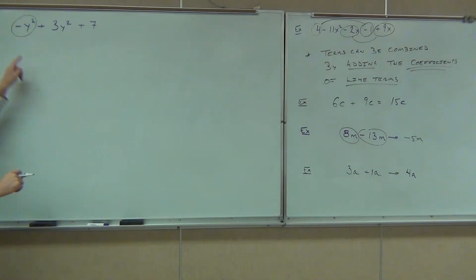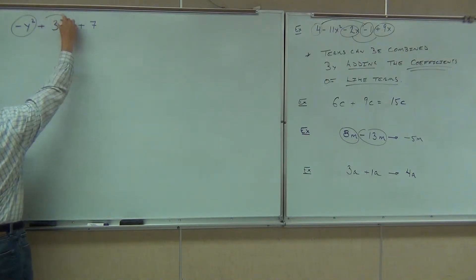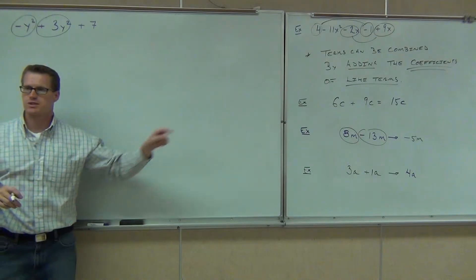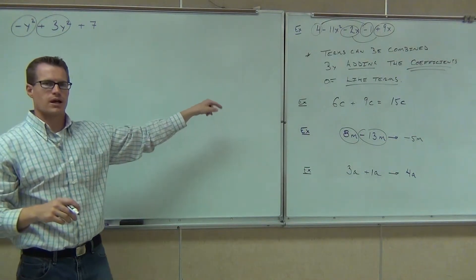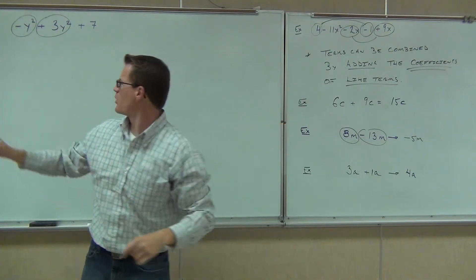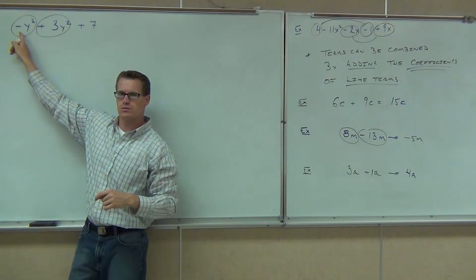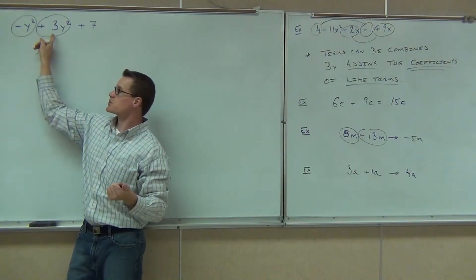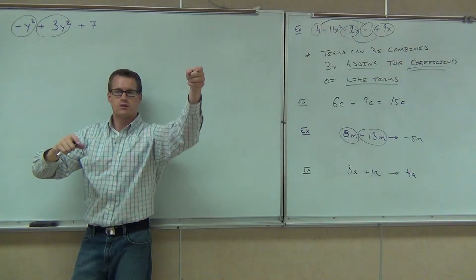So, what's the like term with negative y squared? Y. We're going to circle that term with the sign. Can you combine those like terms like we did over here? Negative y squared and 3y squared. What's the coefficient of this one? One — negative one. Very good, negative one. What's the coefficient of this one? Three. Combine them, and what do you get? Two y squared.